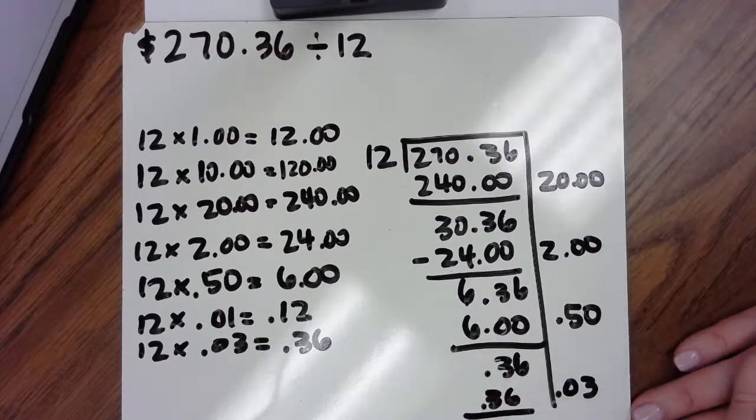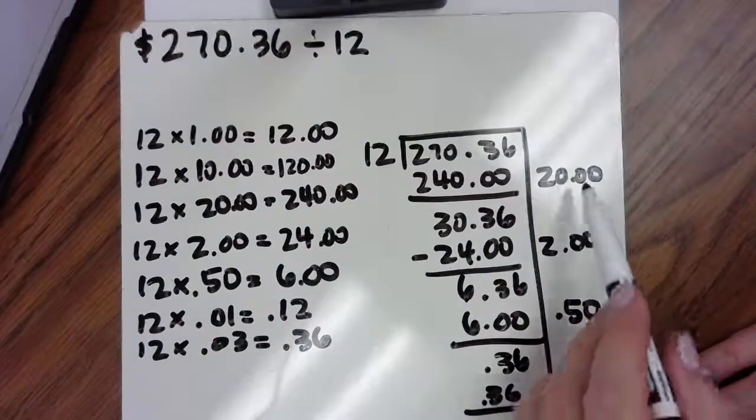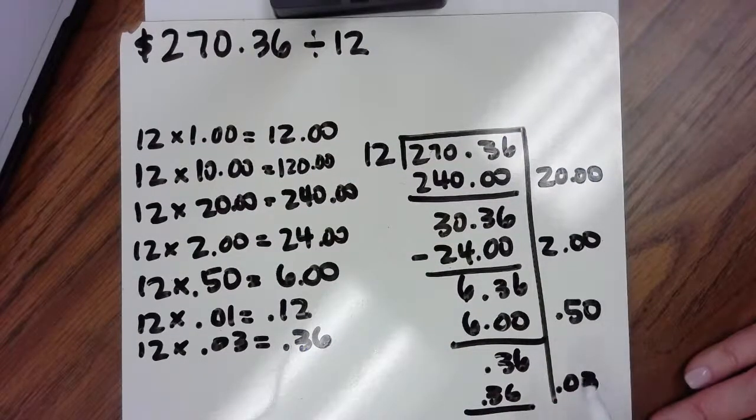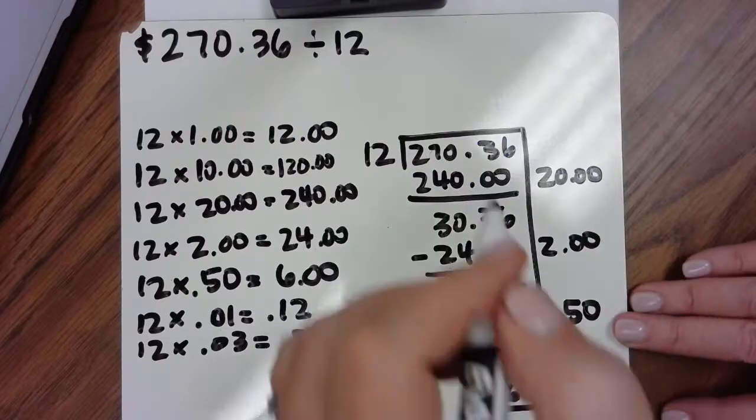Now I've used my entire dividend and so I have these partial quotients here: $20, $2.50, and $0.03. So $22.53. I don't think you can see it, so I'm going to write it up here.